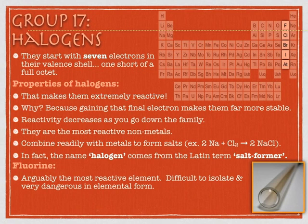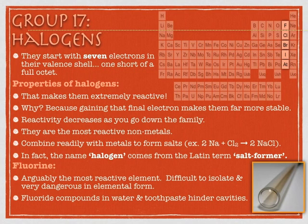The most reactive halogen is fluorine — arguably the most reactive element overall. Many people could argue francium would be equally reactive, but there's very little francium on the planet. Fluorine is a tiny atom with a strong pull on new electrons, making it very difficult to isolate. In fact, the scientist who isolated it, Henri Moissan, won a Nobel Prize for it — beating out none other than Mendeleev himself for the 1905 Nobel Prize. Mendeleev and Moissan both died the following year, meaning Mendeleev never won a Nobel Prize.